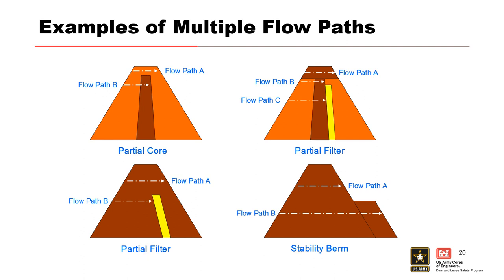At the bottom left, this is a homogeneous dam with a partial height incline chimney filter. Flow path A is above the elevation of the filter and has an unfiltered exit for concentrated leak erosion at the downstream face. Flow path B has a filtered exit at the incline chimney filter.